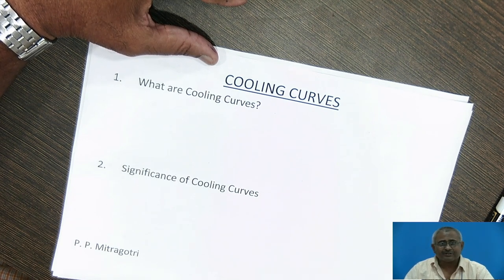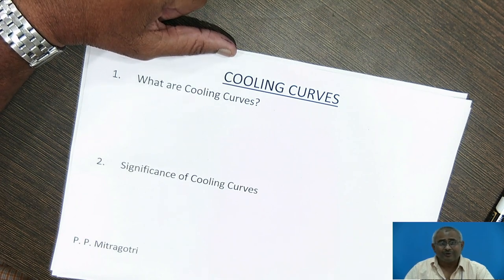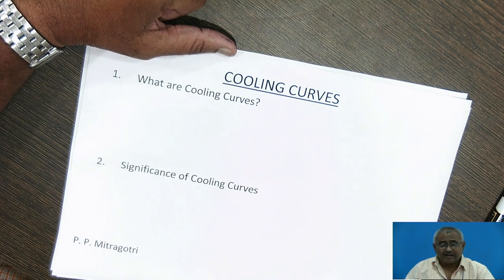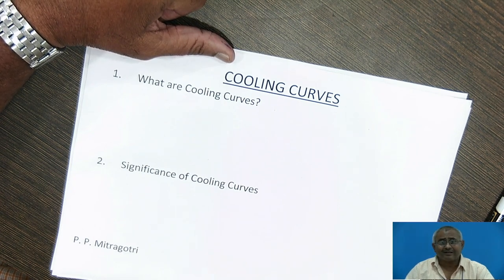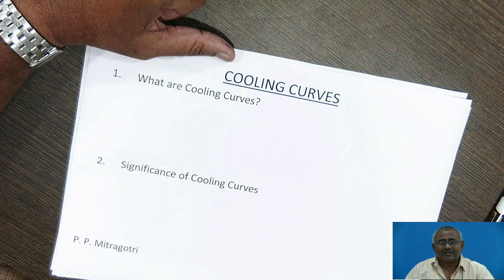Cooling curves are very significant in the study of metals and alloys because they give us an idea regarding transformations occurring during cooling. Secondly, cooling curves of alloys give us an idea regarding the freezing range of an alloy. Due to knowing the freezing range, we can understand the foundry properties of that alloy. Thirdly, cooling curves help us in constructing equilibrium diagrams and phase diagrams.